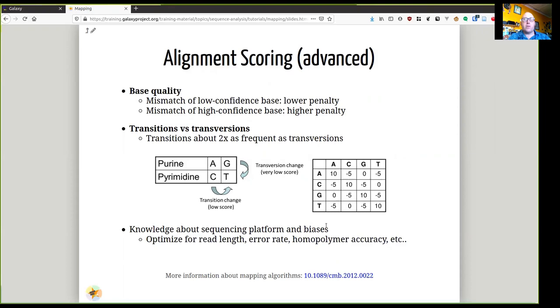We don't need to only use the simple letter information when we are doing an alignment score. Firstly, with the sequencing that we get from modern sequencing machines, we have not just what the letter is, but what its quality is. So we can look at the base quality and maybe count mismatches of low confidence bases with a lower penalty than mismatches of high confidence bases.